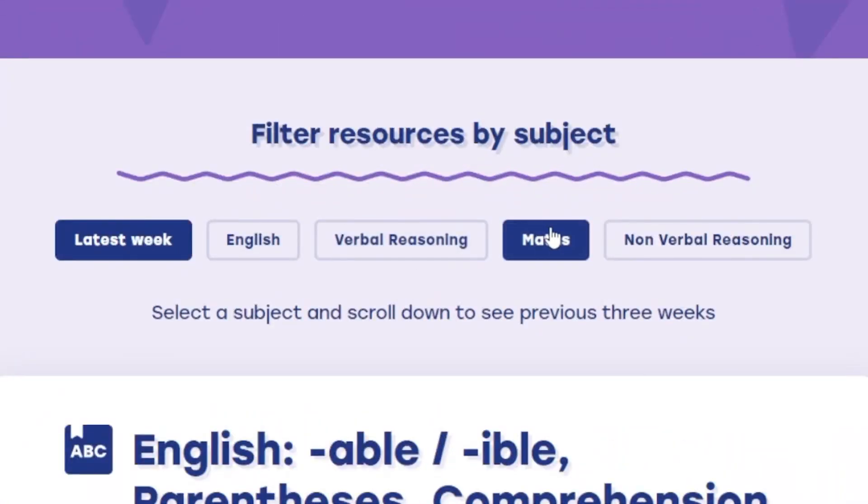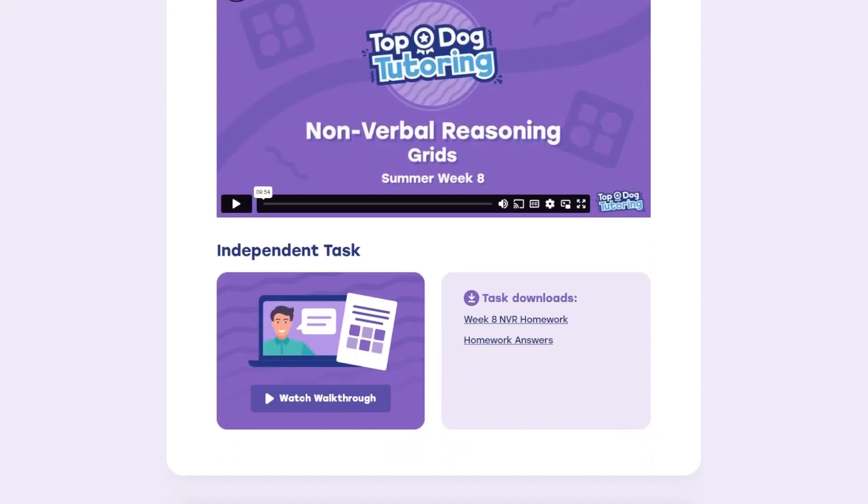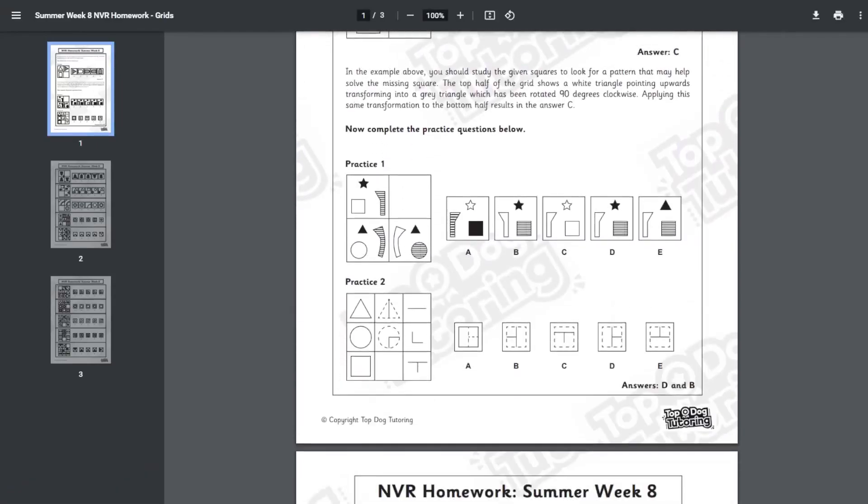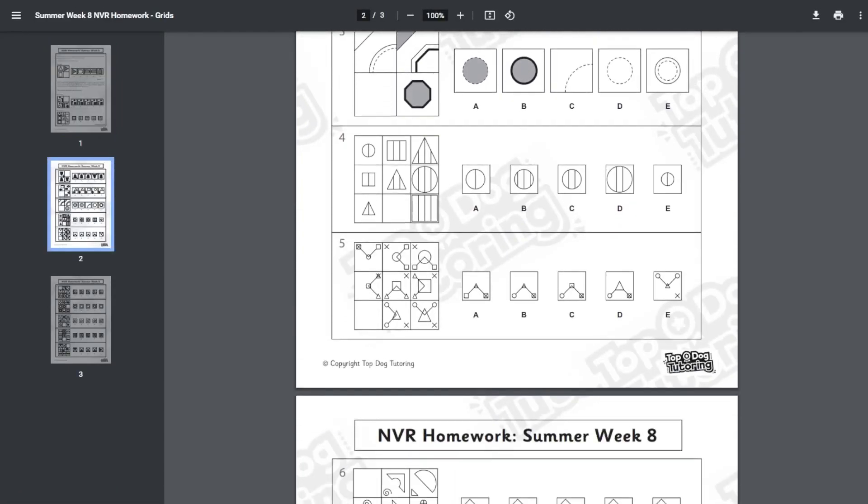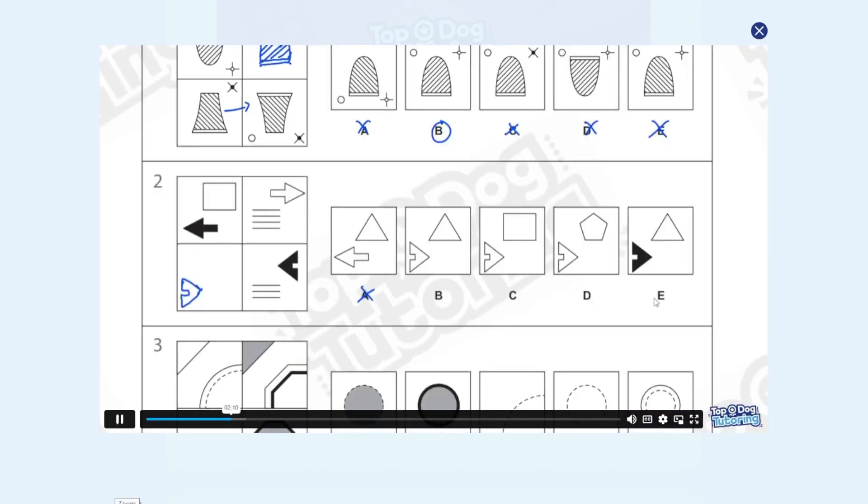But before we get stuck into that, I want to talk to you about the amazing offer we are running for the whole of October alongside these daily videos. If you like this content, you're going to love what we have on offer on our website. We release English, maths, non-verbal and verbal reasoning lessons every single week. Premium video lessons to learn all the things you need to know to pass the test. There's homeworks where you can download and have a go at yourself. And if you want to see what the answers were and exactly how to solve them, we've got a video for that as well.